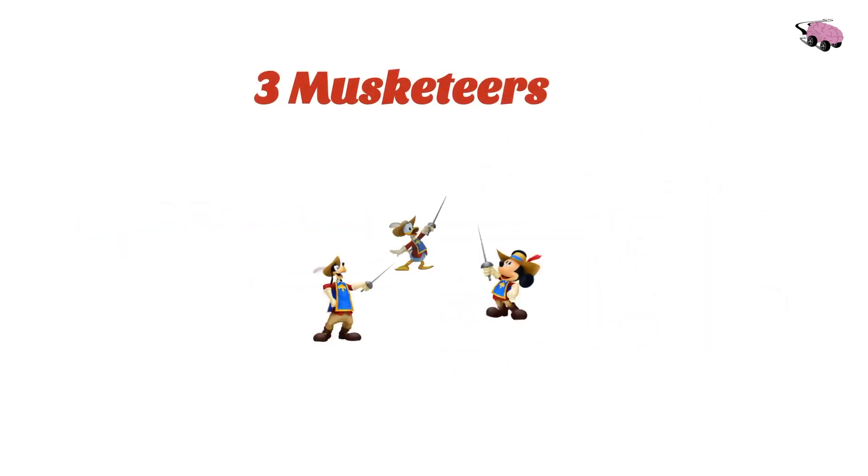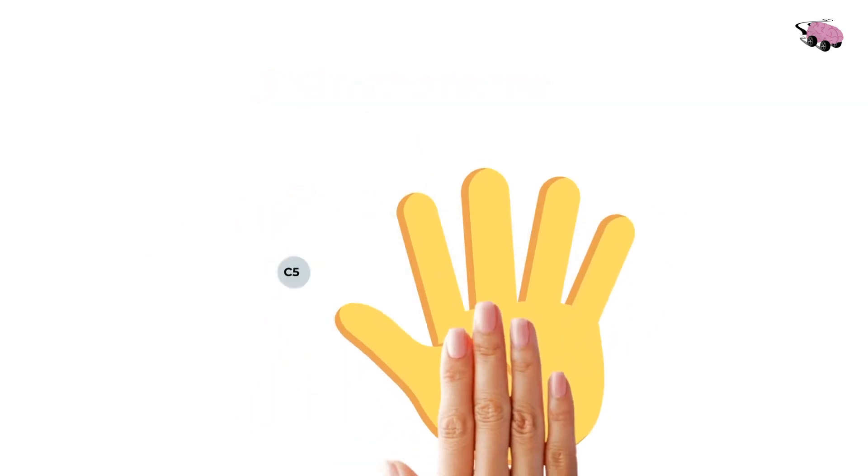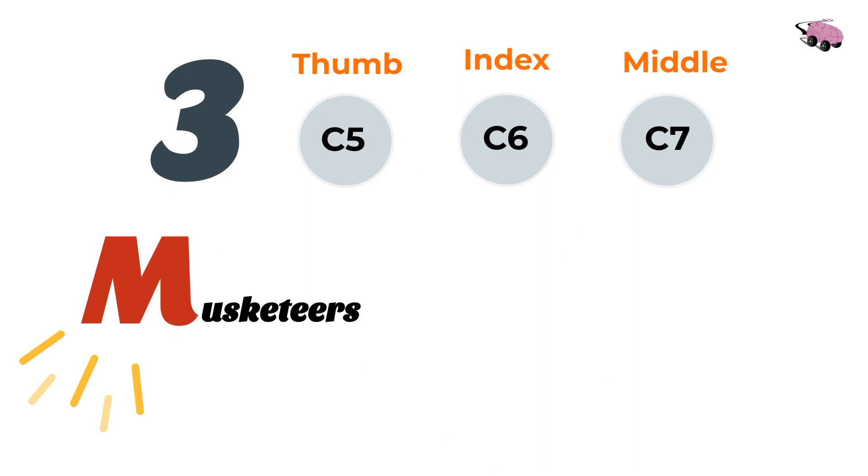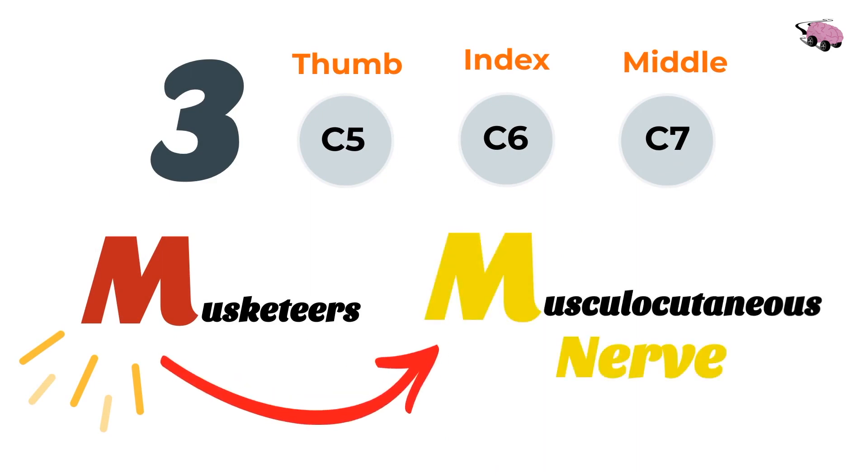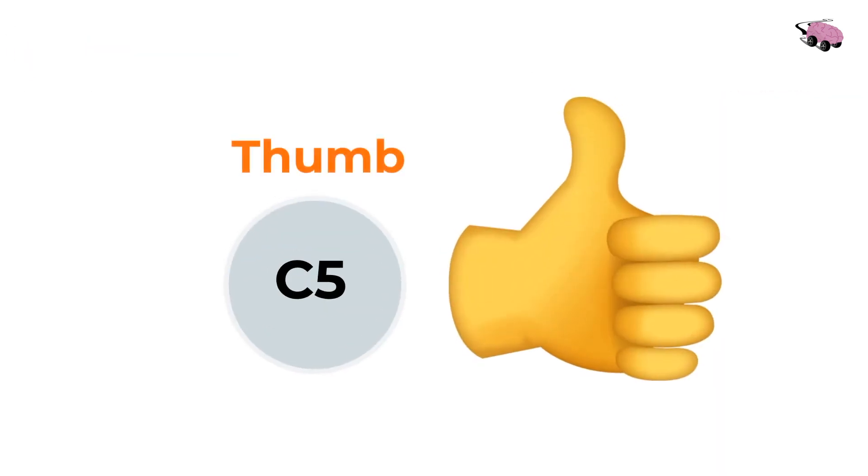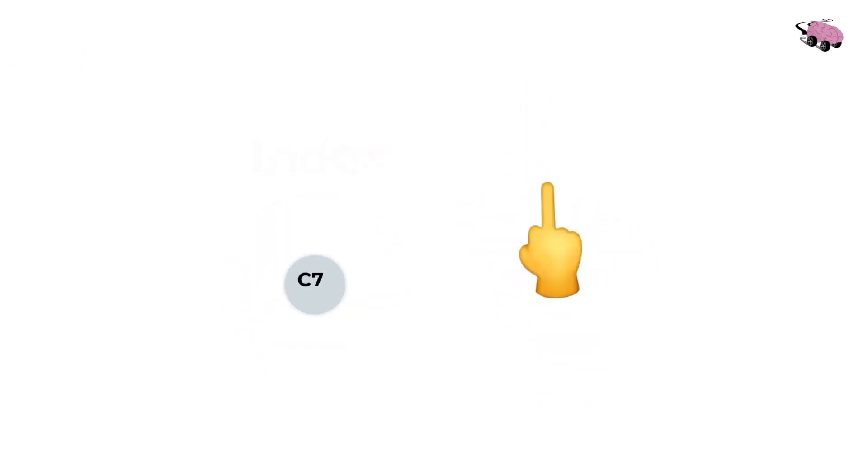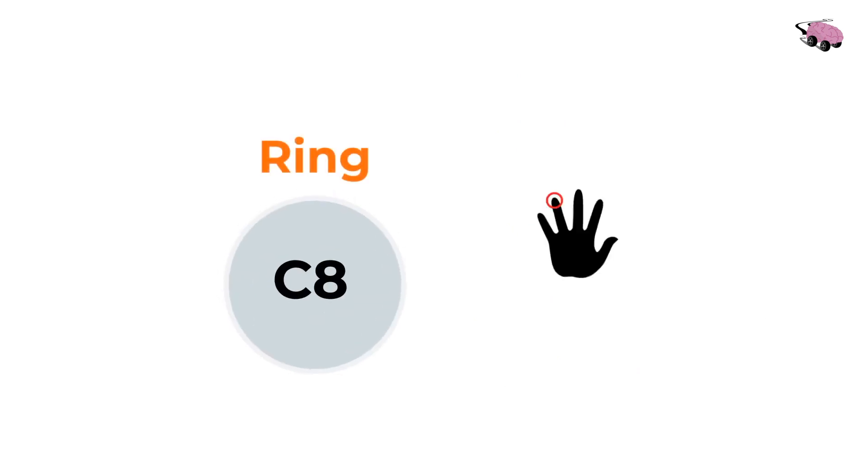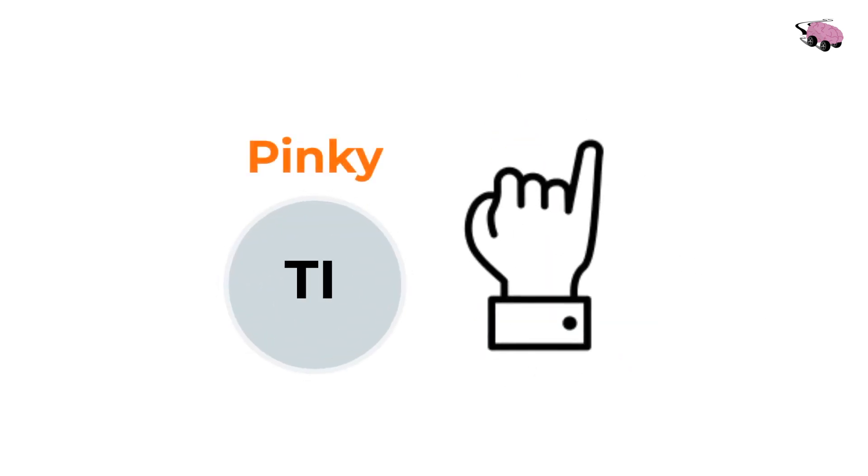Three musketeers. We have three: thumb C5, index C6, and middle finger C7. Three will be for the root values and M for musketeers corresponds with our first nerve, musculocutaneous nerve. Now let's label our brachial plexus with what we just learned. Don't forget the thumb is for C5, index finger is for C6, middle finger is for C7, ring finger is for C8, and finally our little pinky is for T1.